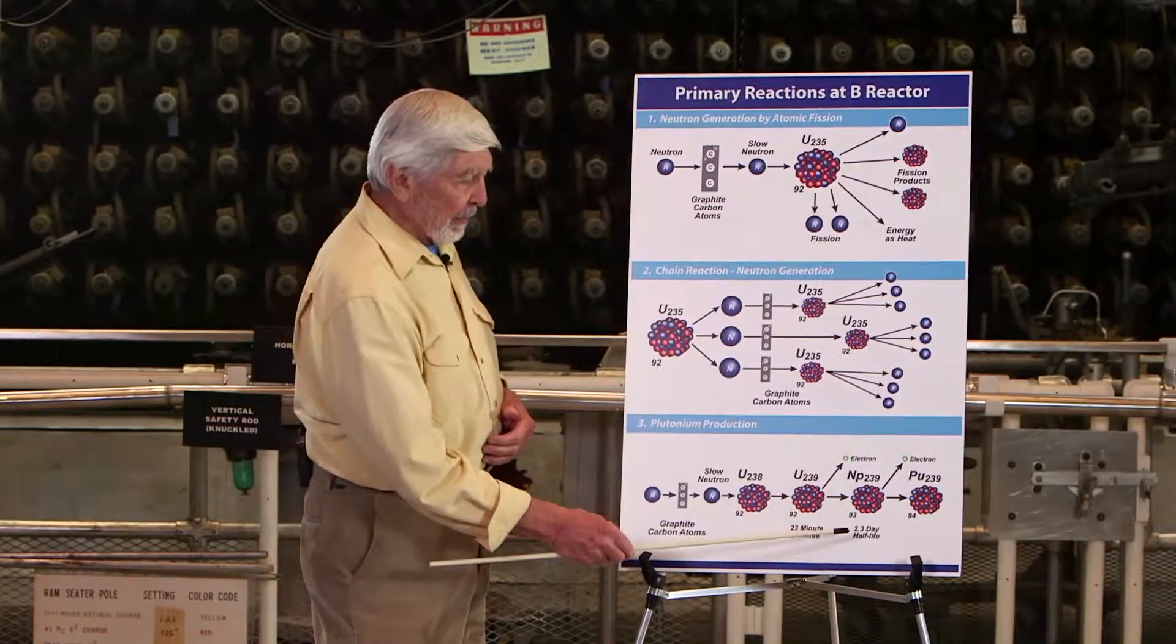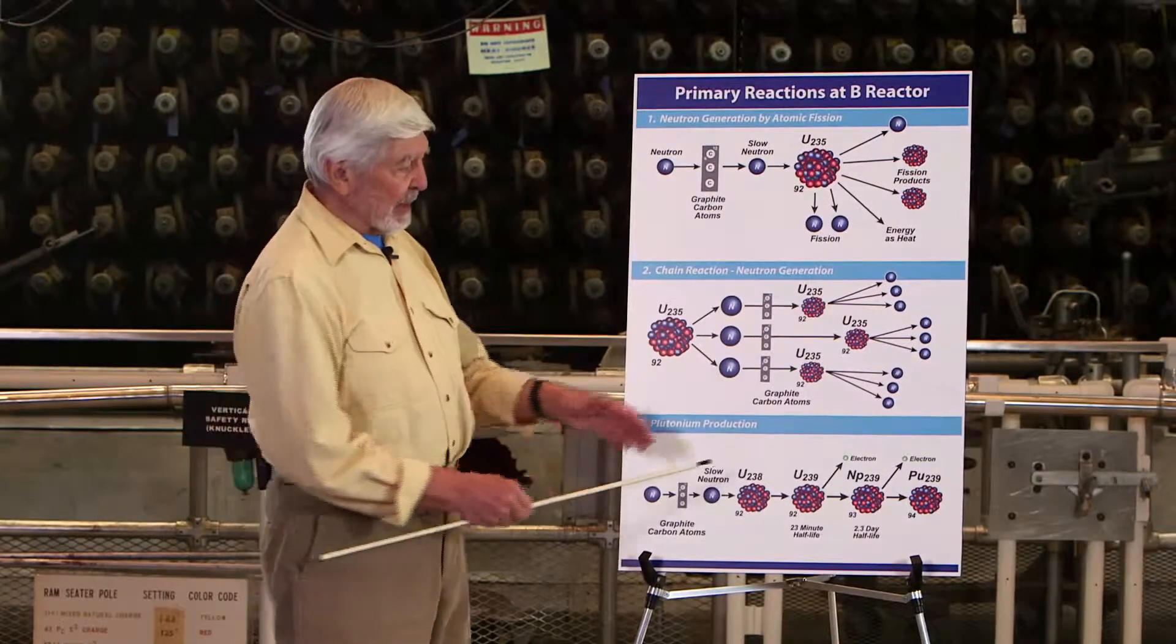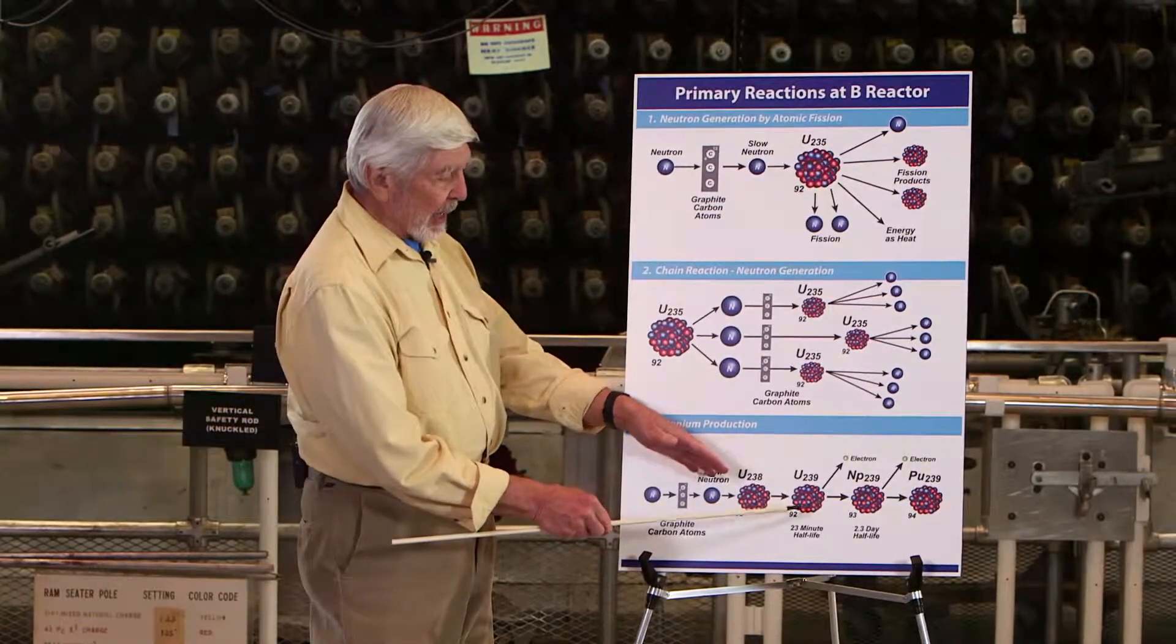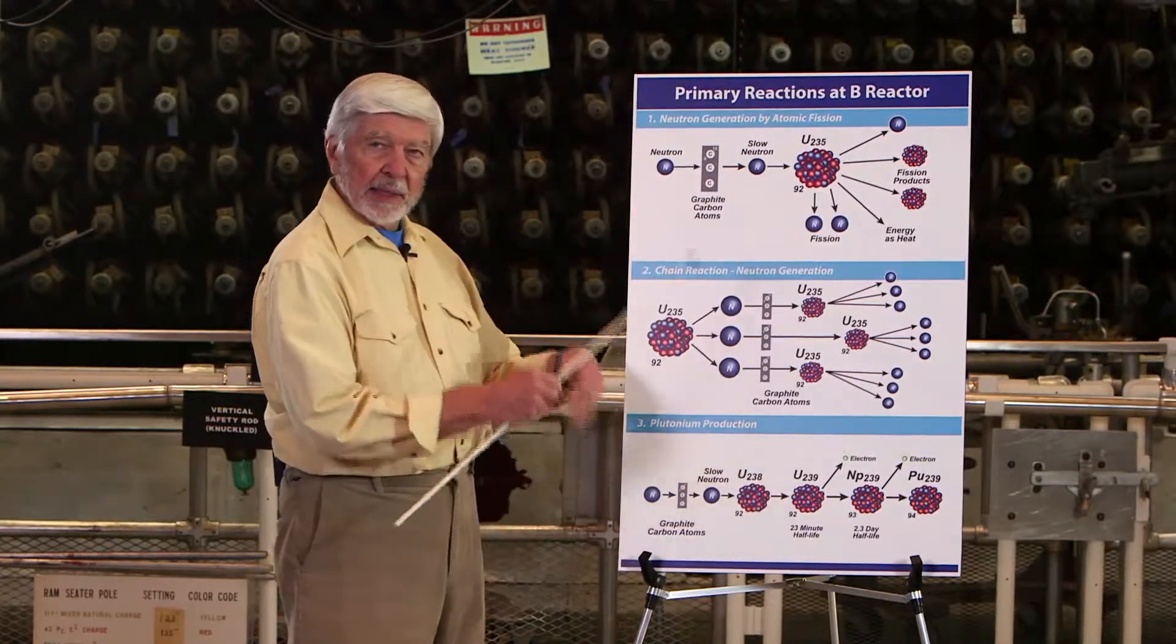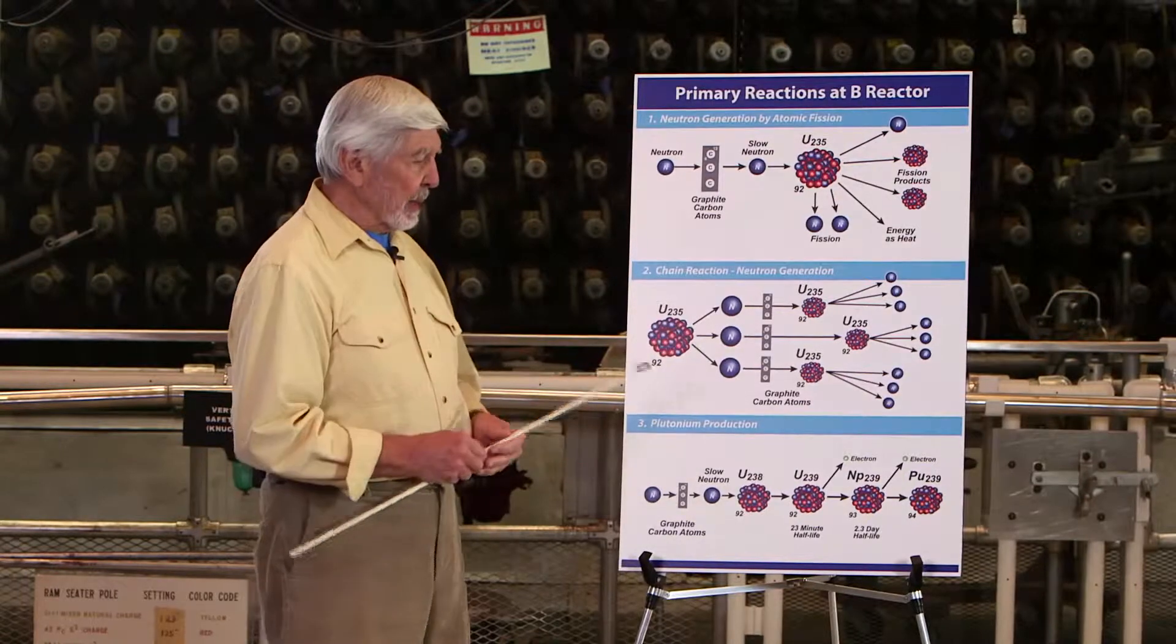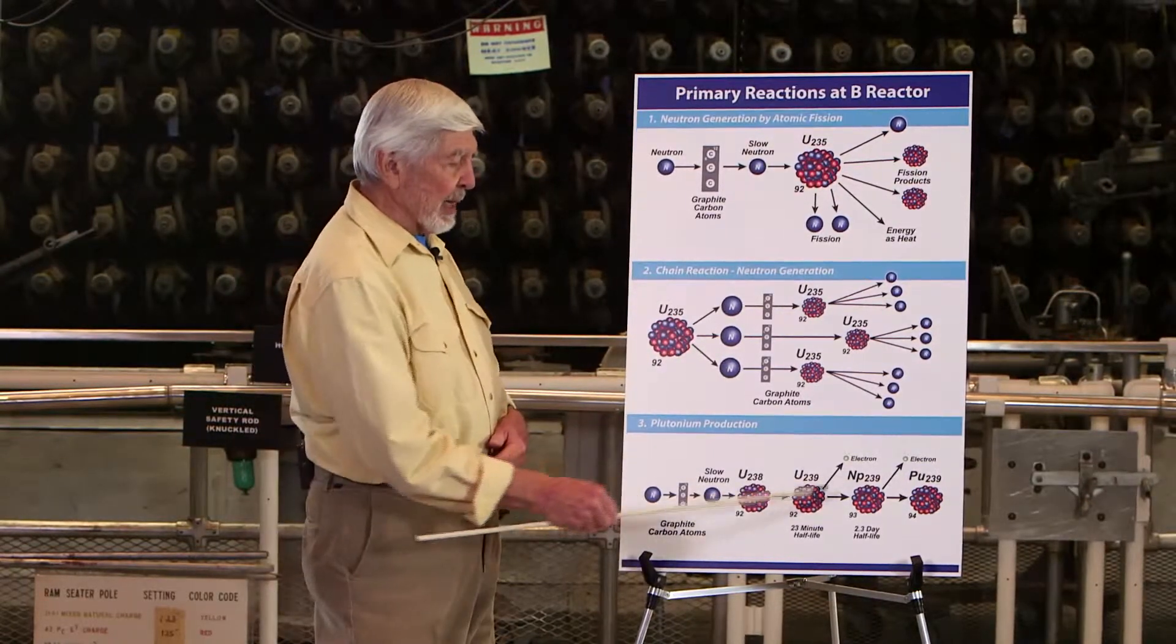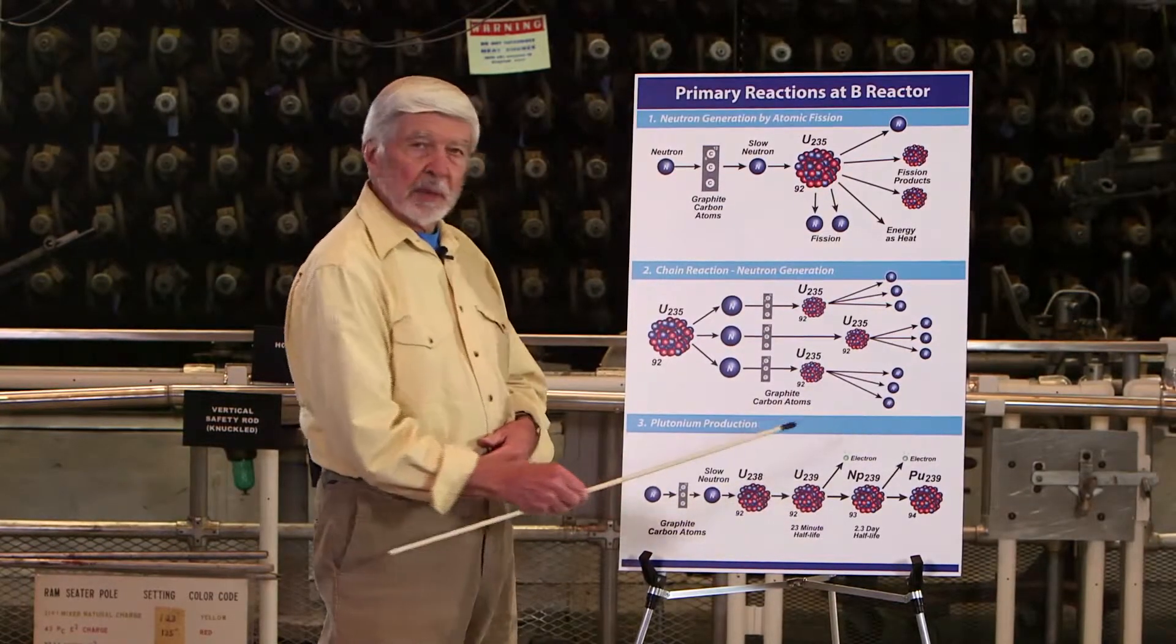The neptunium half-life is 2.3 days. Half-life means half of the uranium-239 changes to neptunium in 23 minutes, and then in the next 23 minutes, half of the remaining uranium-239 changes. So in a matter of a few minutes, all the uranium-239 is changed to neptunium.